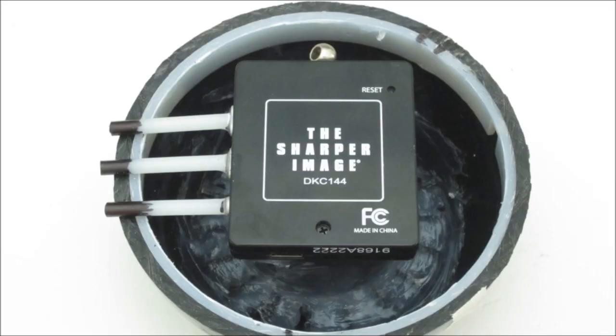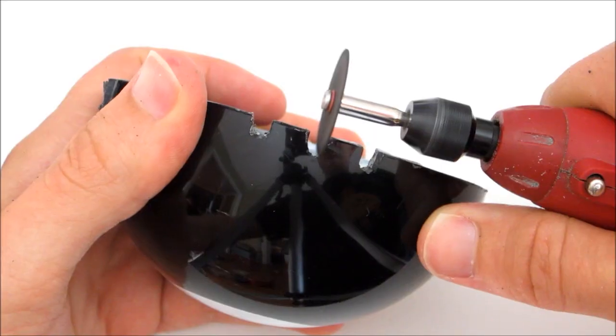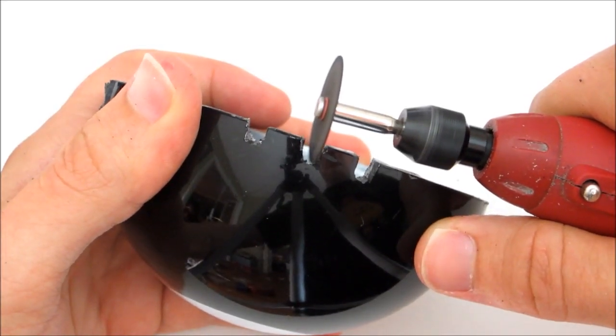Next, we need to cut slots for the button extenders and the USB cable on the top half of the Magic 8-Ball housing. Start by lining up the two halves and marking each location. Then using a rotary tool, cut out a slot for each one.